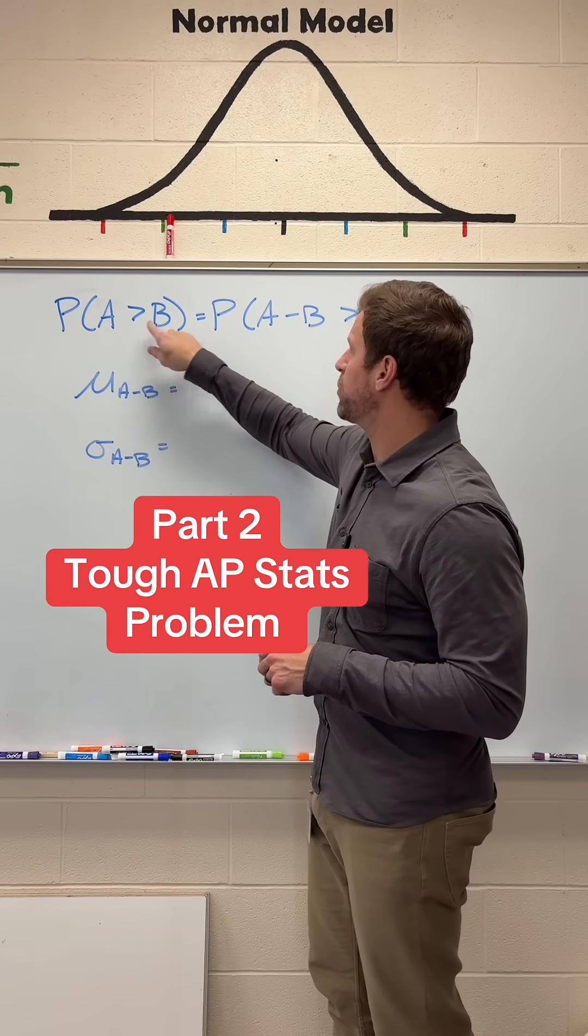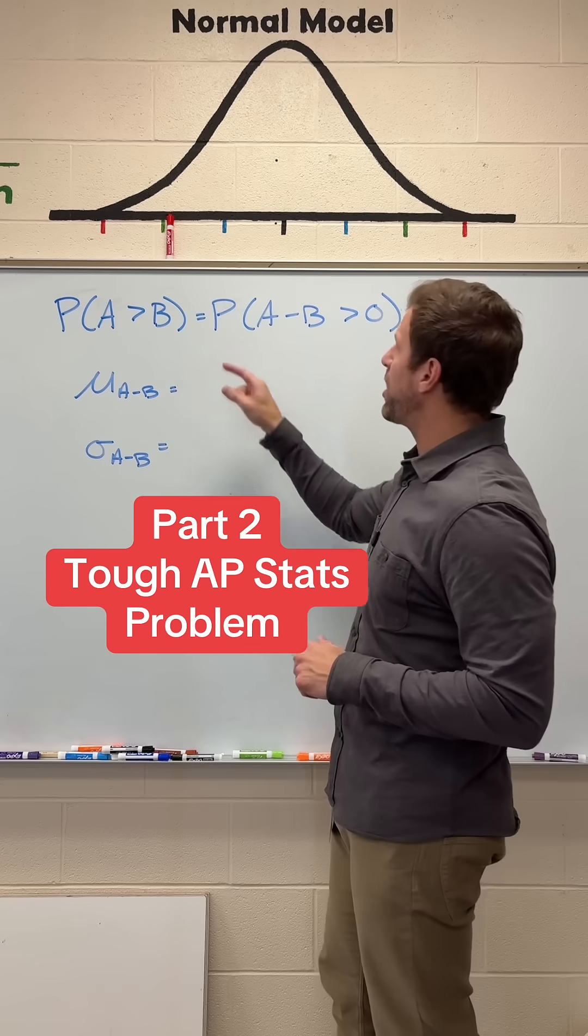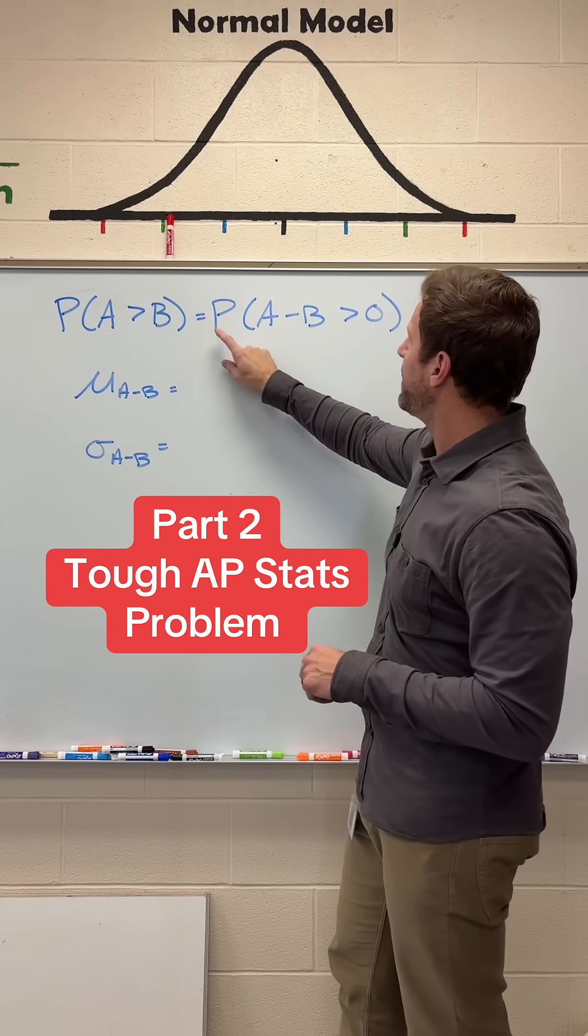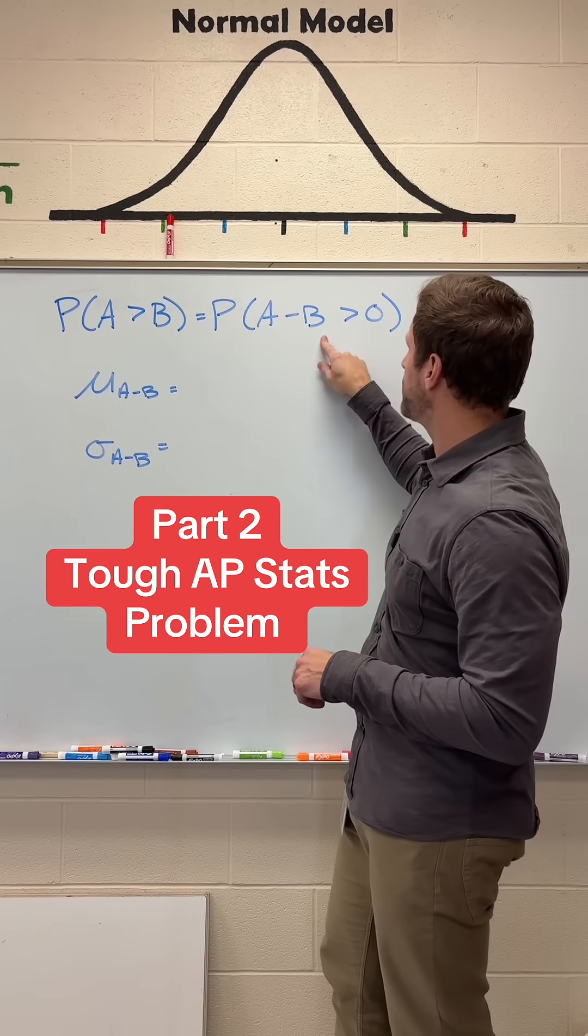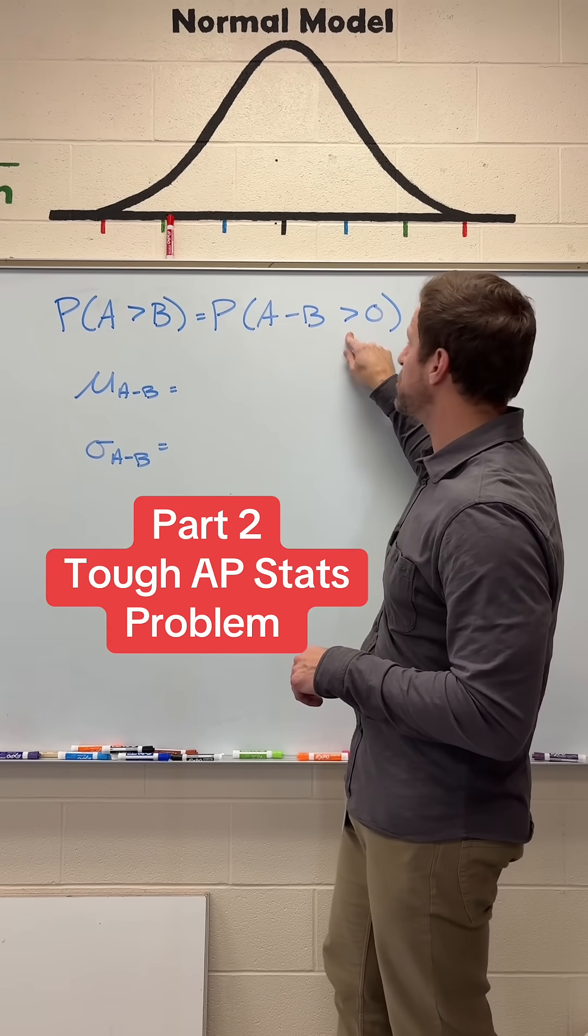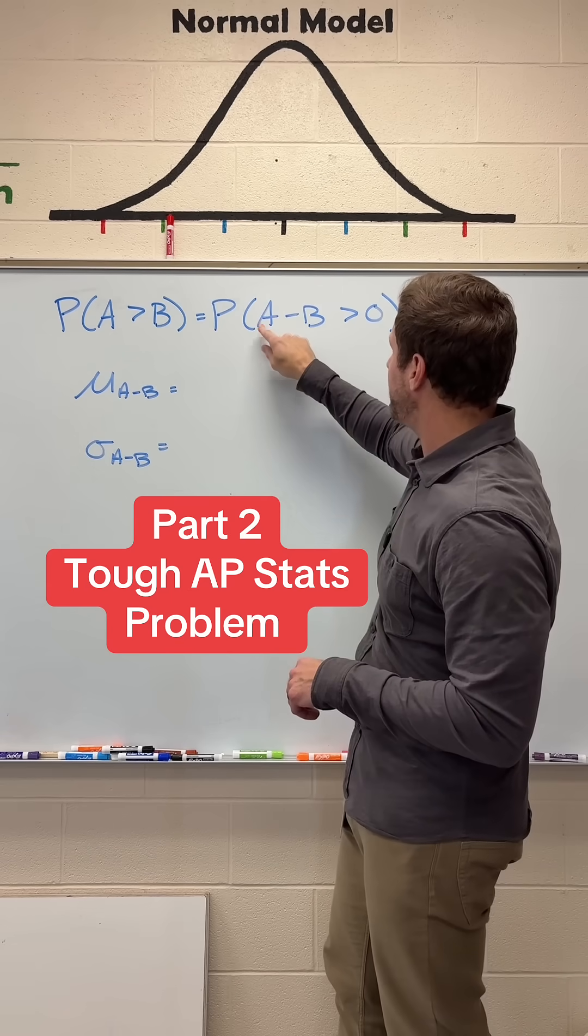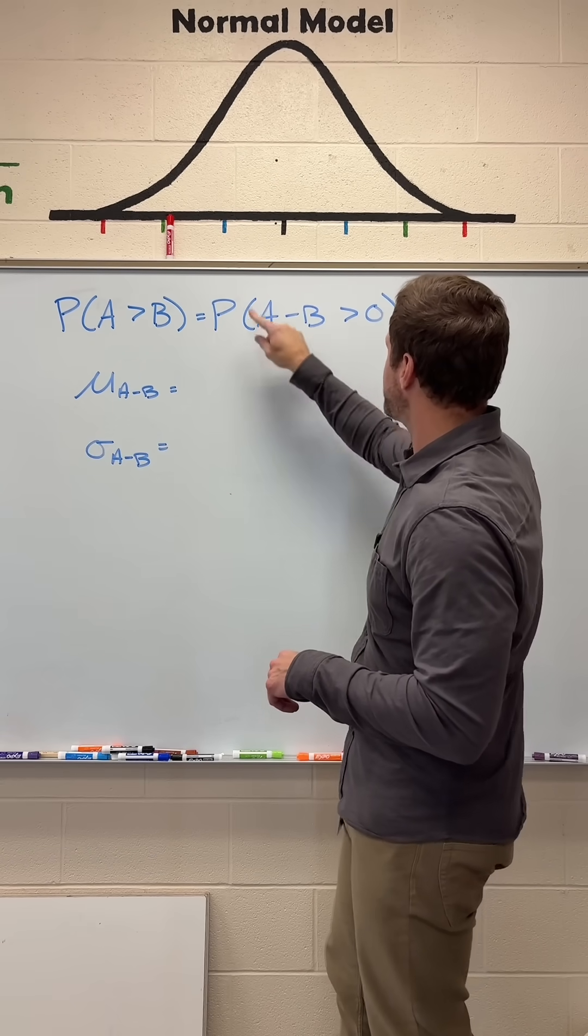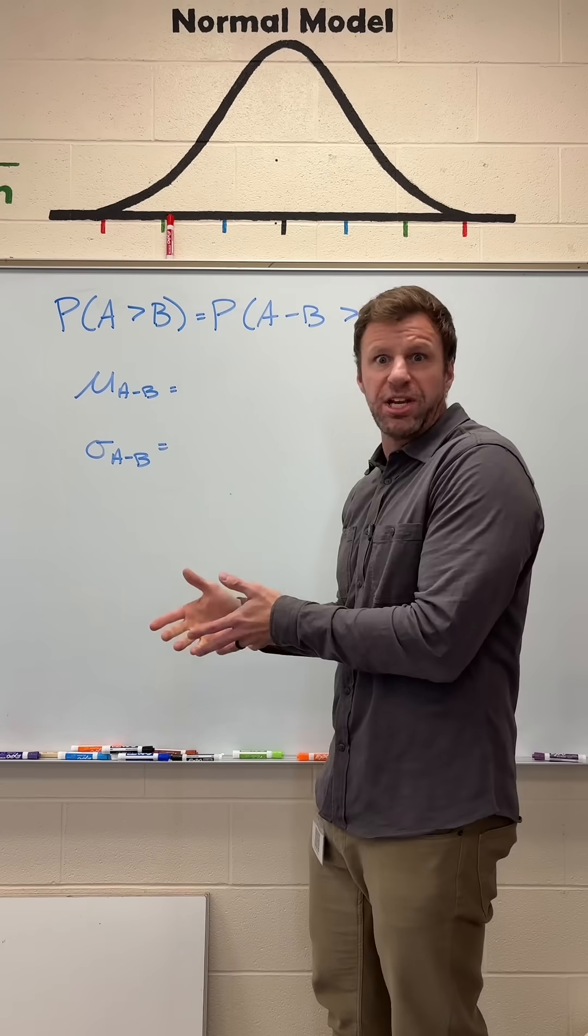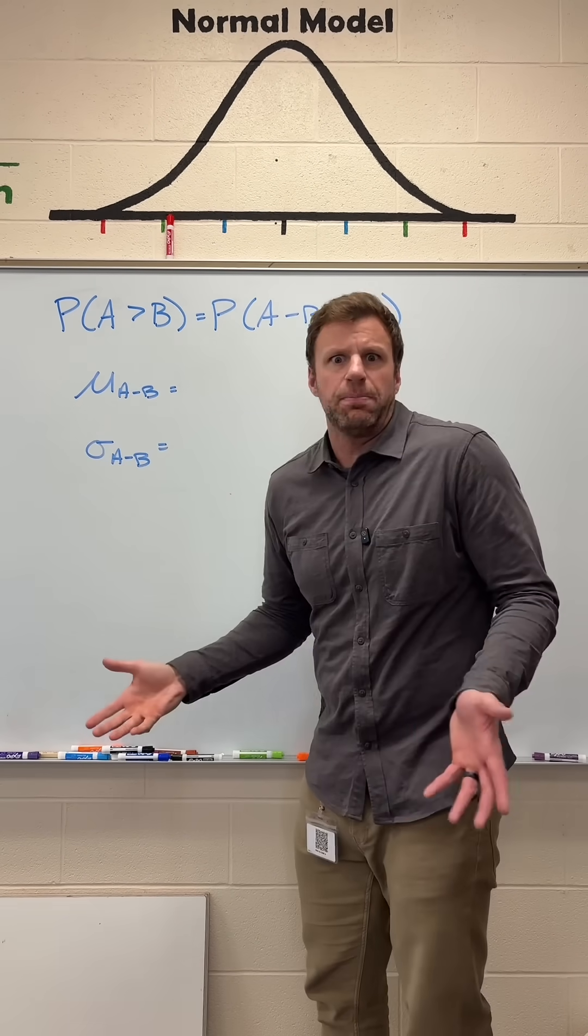The question is the probability that Andy's score is greater than Bob's. I'm going to do a little bit of algebra here. I'm going to subtract that B to the other side. We need to find the probability that the difference between Andy minus Bob is greater than 0. If Andy's score is bigger than Bob's, this difference will be greater than 0, and that means Andy did better.